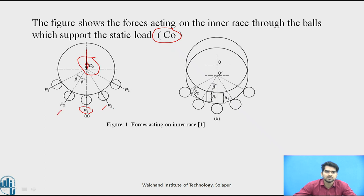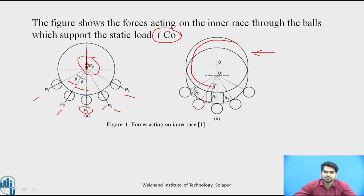The reactive forces are P₁, P₂, P₃, which are equal and opposite reactions to the static load. Since the balls are equally spaced, they make an angle beta with each other. This is the force analysis showing reactive forces due to the static load. As the load acts vertically downward, deformations occur in the race: delta₁ is the deformation at the first ball, delta₂ at the second ball, delta₃ at the third ball, and so on.